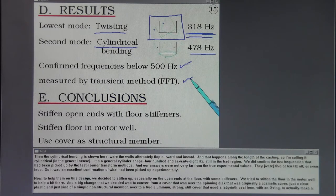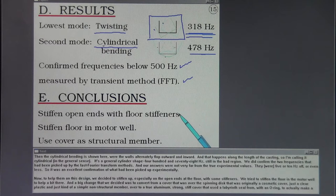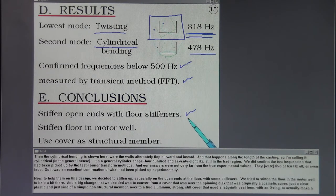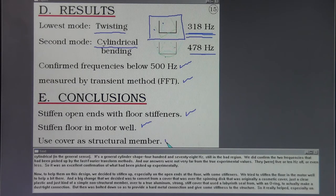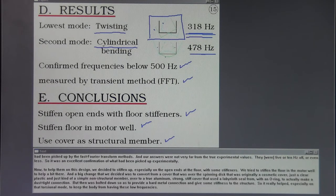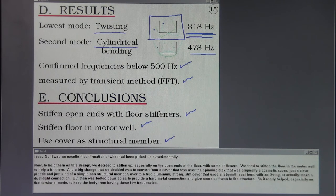Now, to help them on this design, we decided to stiffen up, especially on the open ends at the floor with some stiffeners. We tried to stiffen the floor and the motor well to help a bit there, and a big change that we decided was to convert from a cover that was over the spinning disc, that originally was kind of a cosmetic cover, just a clear plastic and a simple non-structural member, over to a true aluminum strong stiff cover that used a labyrinth seal with an O-ring to actually make a dust-tight connection, but then was bolted down so as to provide a hard metal connection and give some stiffness to the structure. So it really helped, especially on that torsional mode, to keep the body from having these low frequencies.